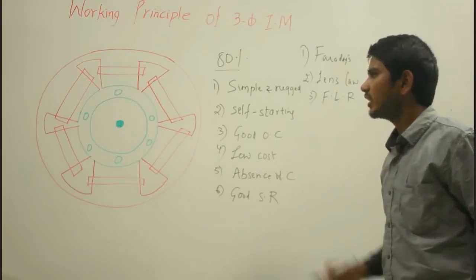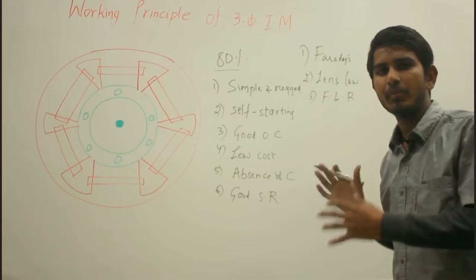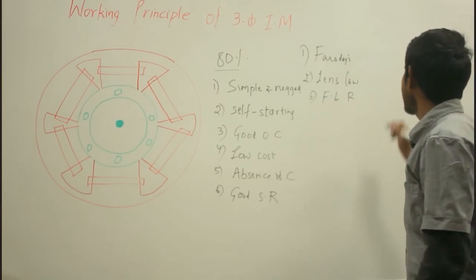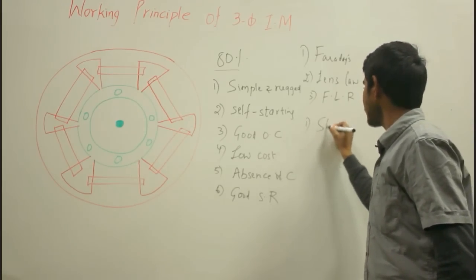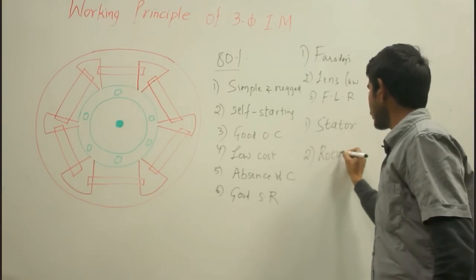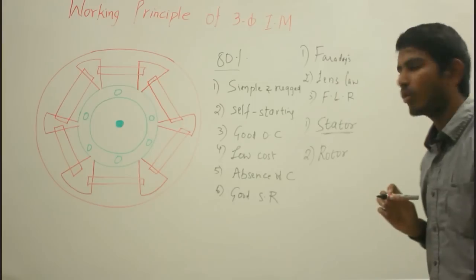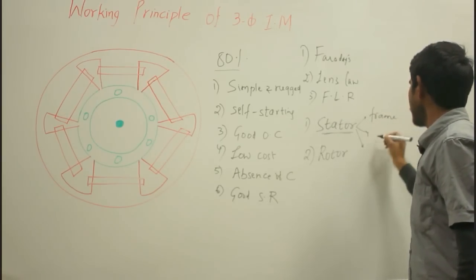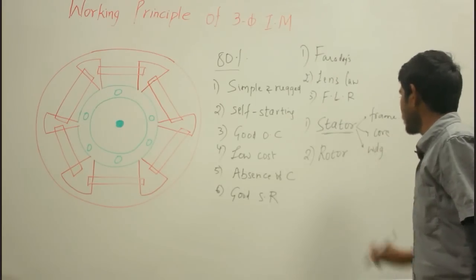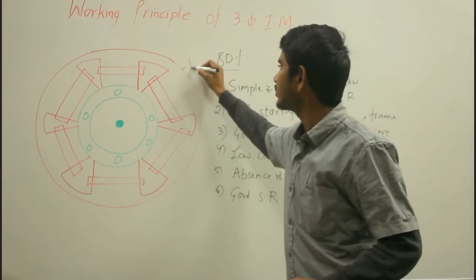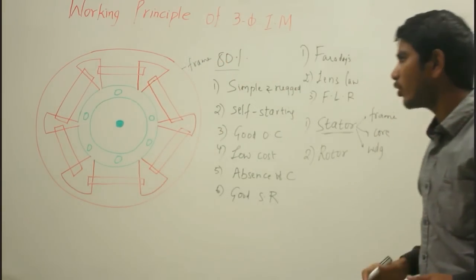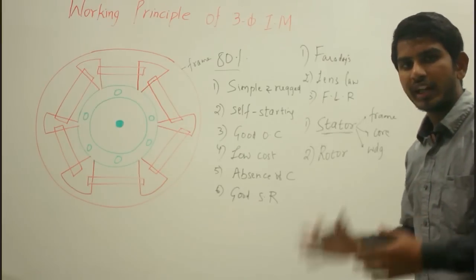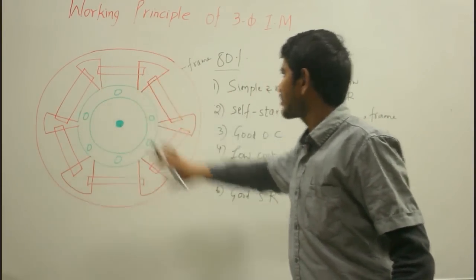Before going into the greater details of the working principle, let us understand the basic construction of the three-phase induction motor. Any rotating electrical machine has mainly two parts: the stator and the rotor. The stator is the stationary part of the motor and has three parts: the stator frame, stator core, and stator windings. The stator frame is the outermost cover, providing support to the stator core and winding, and also provides protection and mechanical strength to all the inner parts.